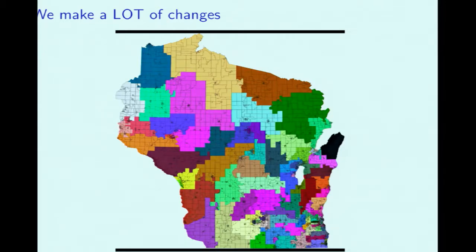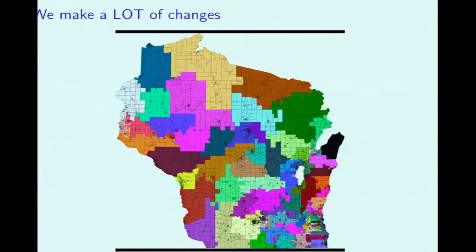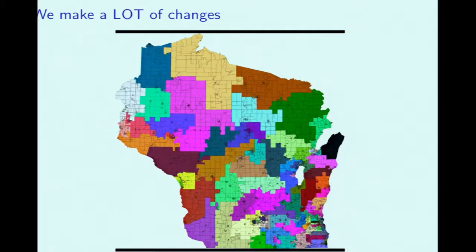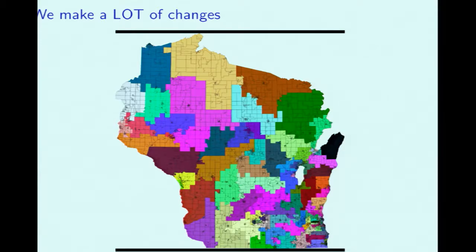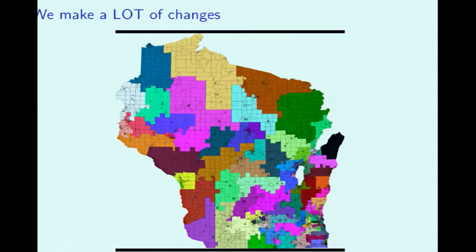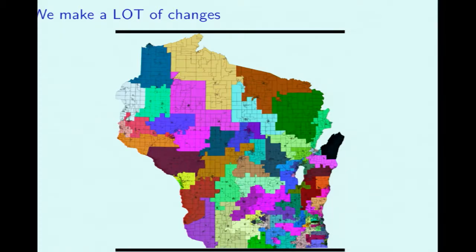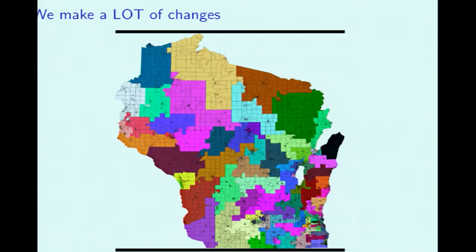When we run the algorithm, we look at a sequence of something like a trillion maps — you'd have to watch this video for a thousand years to see a full run. For each of these districtings, we conduct a hypothetical election using past voting data to see how each party would do with that map, in terms of number of seats or some other metric capturing which party the map favors.